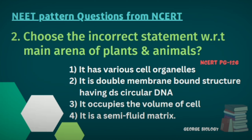Number two: Choose the incorrect statement with respect to the main arena of plants and animals. Options: it has various cell organelles; it is a double membrane bound structure having double-stranded circular DNA; it occupies the volume of the cell; it is a semi-fluid matrix. The incorrect statement is the second option — cytoplasm is covered by plasma membrane and does not consist of double-stranded circular DNA.